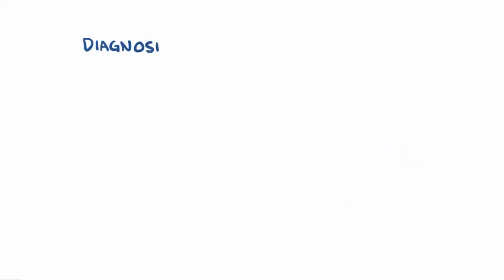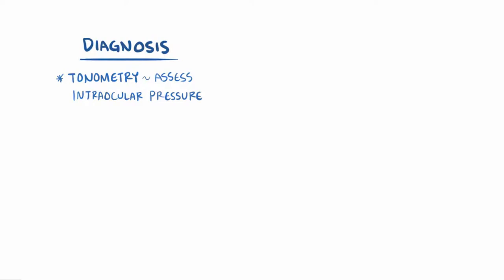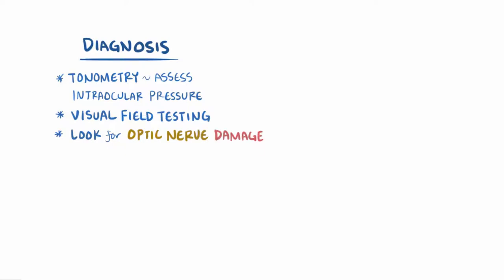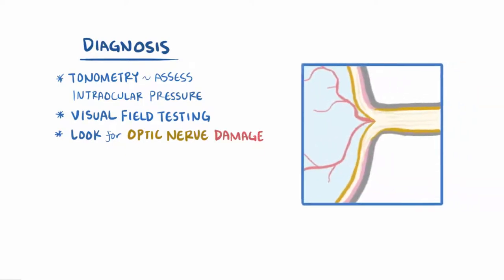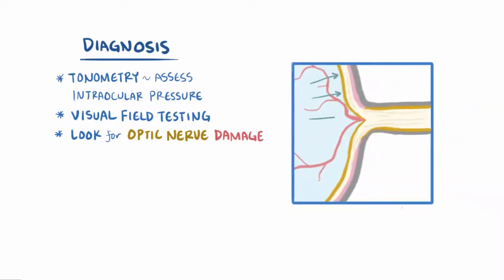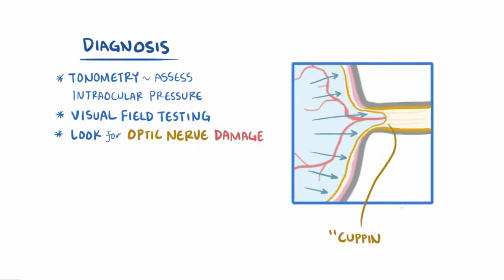For diagnosis of glaucoma, tonometry can be used to assess for increased intraocular pressure. Visual field testing can also be done, as well as looking directly at the optic nerve and checking for signs of damage. In particular, pressure on the optic nerve results in a thinning of the outer rim of the nerve, which starts to give it a cup shape — this is called cupping — and it's often seen in individuals with glaucoma.